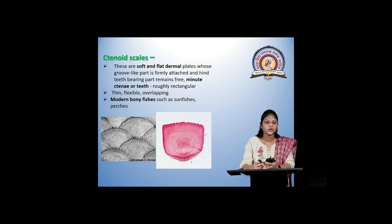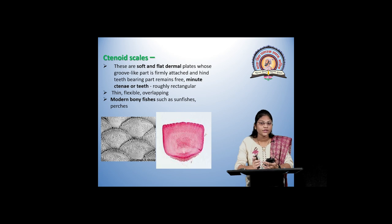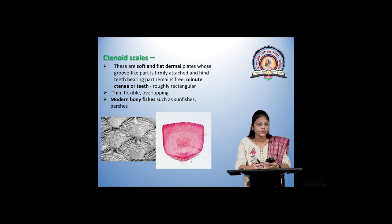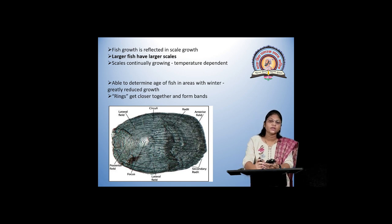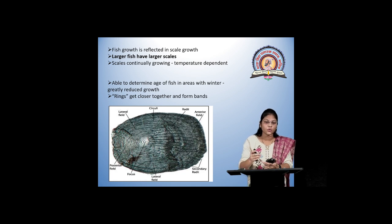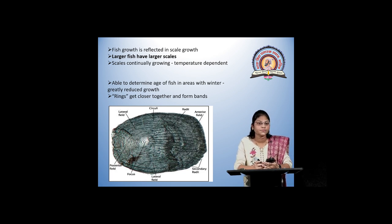Next is the ctenoid scale, which looks somewhat like a cycloid scale, but the difference is that here we can see minute ctenii or teeth-like projections. These are also thin, flexible, and overlapping. They are seen in modern bony fishes such as sunfishes and perches. From the concentric lines of growth, one can calculate fish age. Fish growth is reflected in scale growth — the larger the scales, the older the fish. Scales are continuously growing and are also temperature dependent.